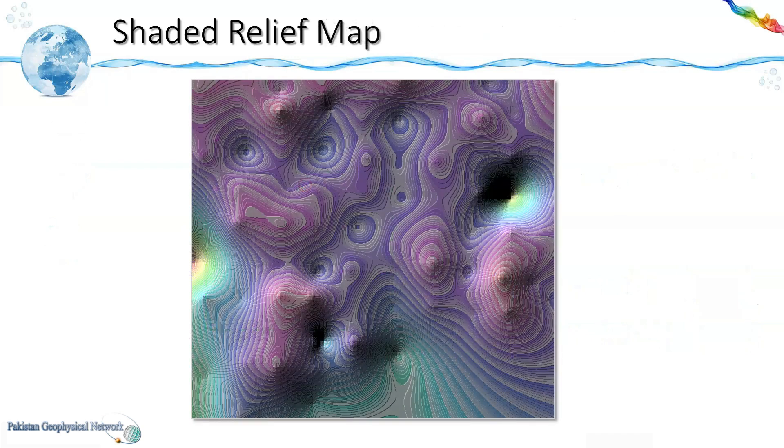In this way we compute the shaded relief for all the nodes and finally we get shaded relief map.